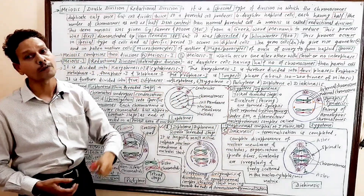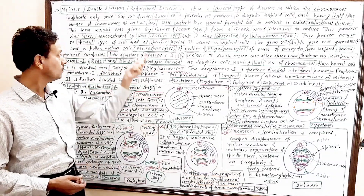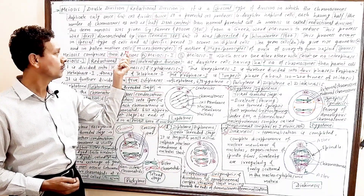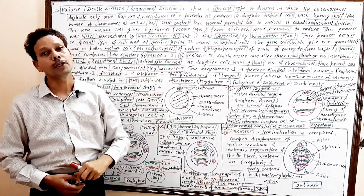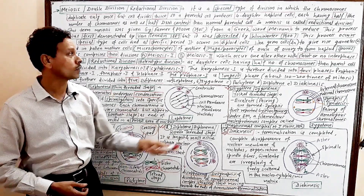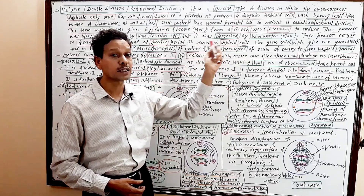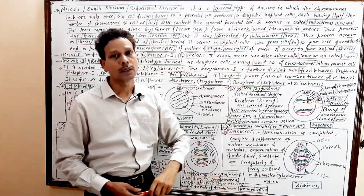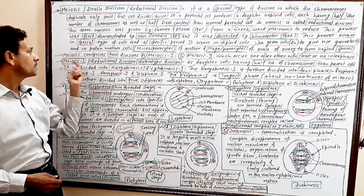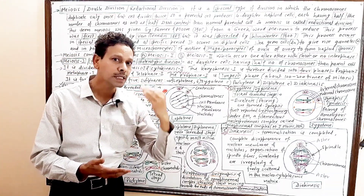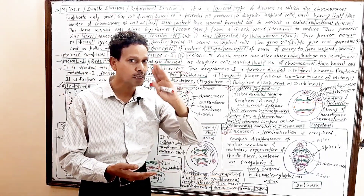In the case of plants, the pollen mother cell — micro sporocytes of the anther — undergoes meiosis to produce four microspores. Similarly, in the case of ovule, the megasporocytes undergo meiosis to produce haploid megaspores in the ovary. Meiosis is divided into two divisions: meiosis first and meiosis second.